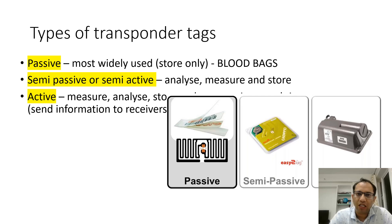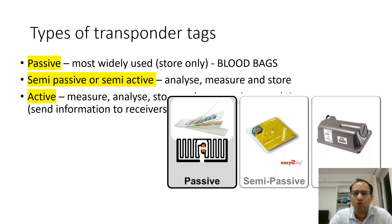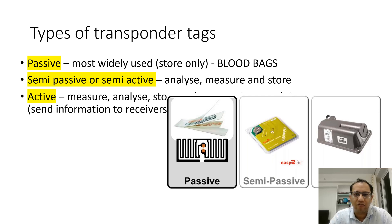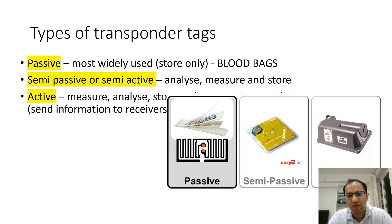These transponder tags are of three types: passive, semi-passive, or active. Passive is the most widely used in blood bags to store information. Semi-passive or semi-active can analyze and measure. Active tags can measure, analyze, store, send information, take back information, etc.